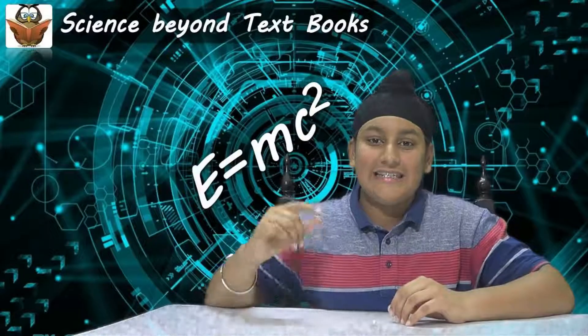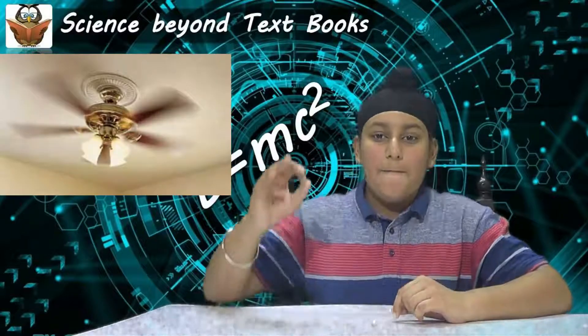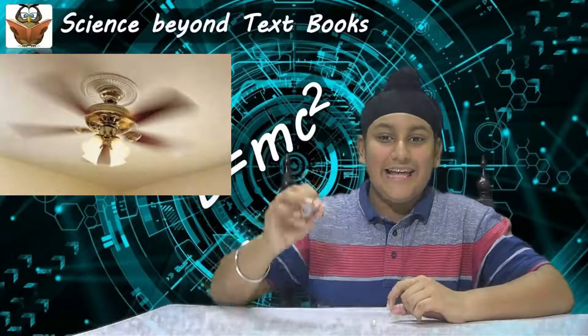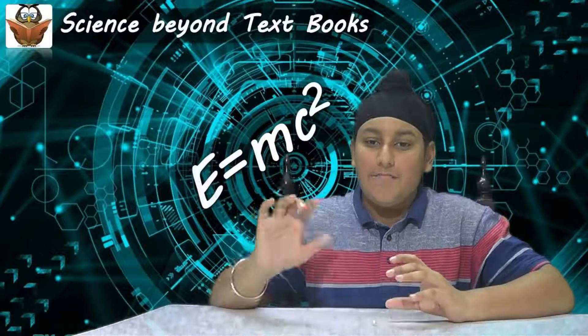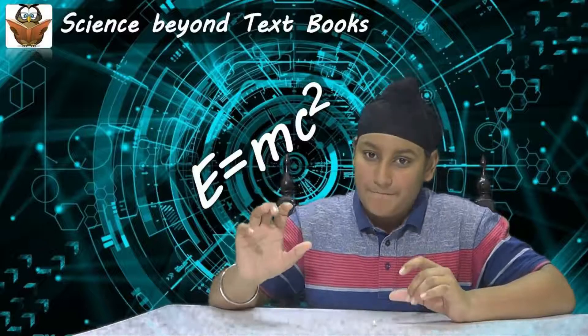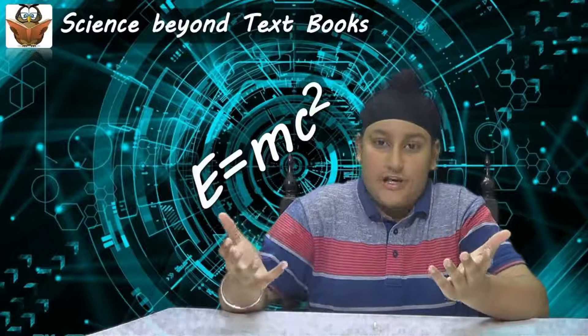Just like the three blades of the fan moving at high speed make the fan look like a solid disk, the electrons revolving around the nucleus at high speed make the atom look like a solid. This is the reason why we see things as solids.